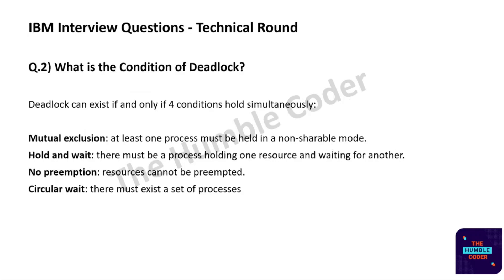Moving on to the next question: what is the condition of deadlock? Deadlock can exist if and only if four conditions hold simultaneously. The four conditions are: mutual exclusion — at least one resource must be held in a non-shareable mode; hold and wait — a process is holding one resource and waiting for another; no preemption — resources cannot be preempted; and circular wait — there must exist a set of processes in a circular chain.